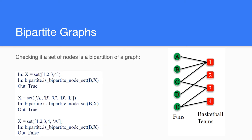Similarly we can check whether a set of nodes is present in the bipartite graph. We define a set X, then check if the set is present in the bipartite graph. For this we pass two parameters: the graph itself and the set of nodes. If the set of nodes is present, the function will return a boolean value: True or False.